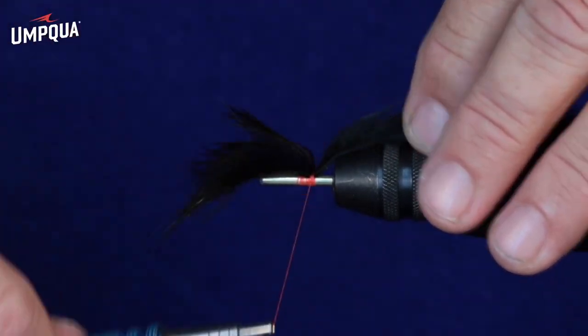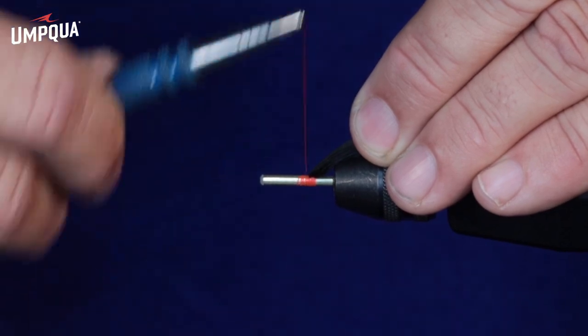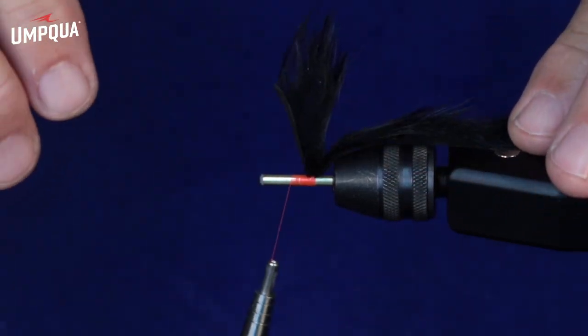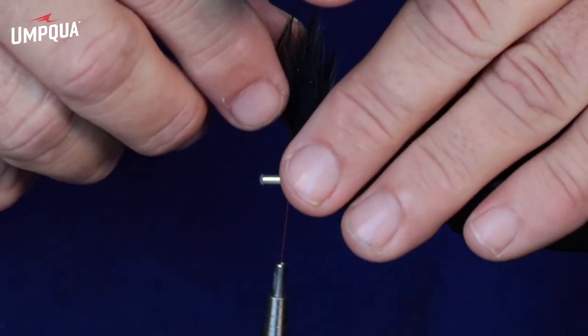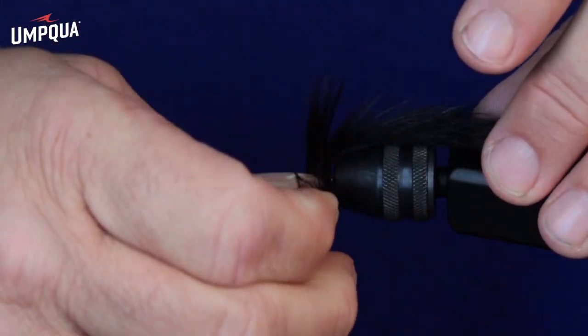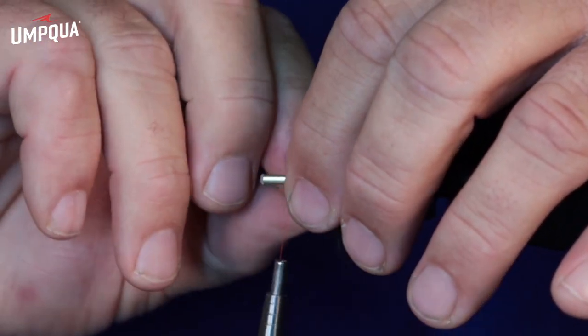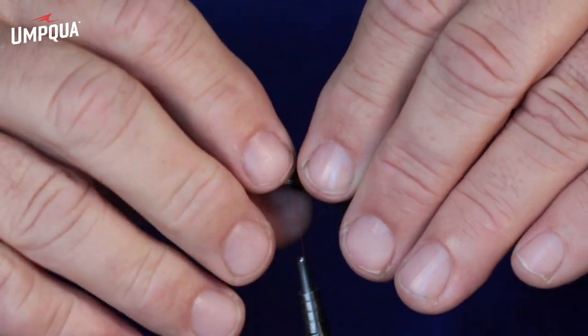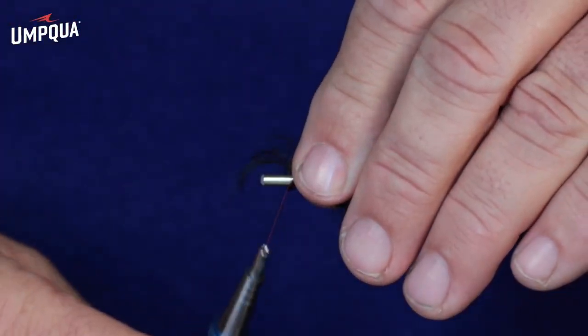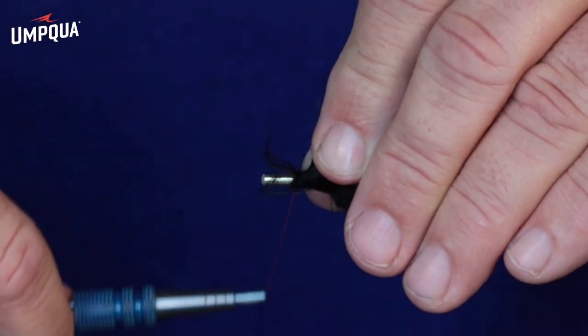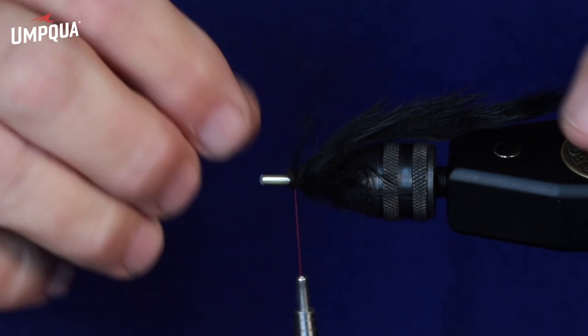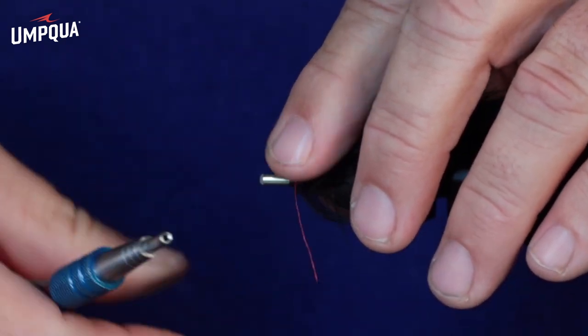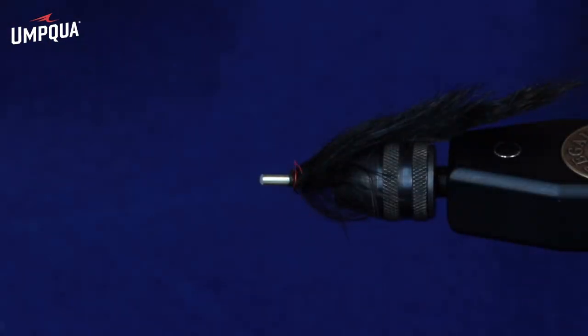Once you've got it locked in there pretty good, we're going to move the thread forward to about half of what we've got there, so a quarter of an inch forward. And then we're going to wrap the rabbit around the tube all the way using every bit of it. And then locking the end of that rabbit strip down with a couple really firm turns of thread.